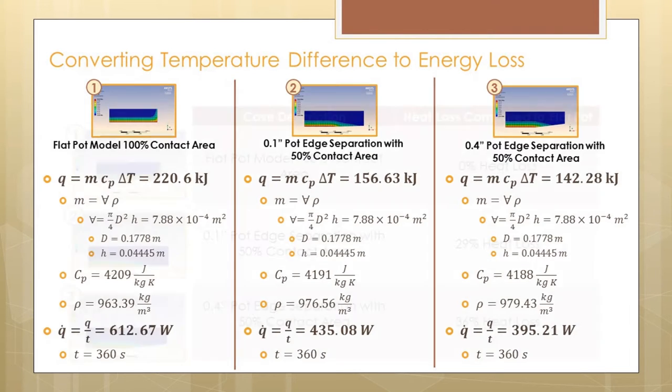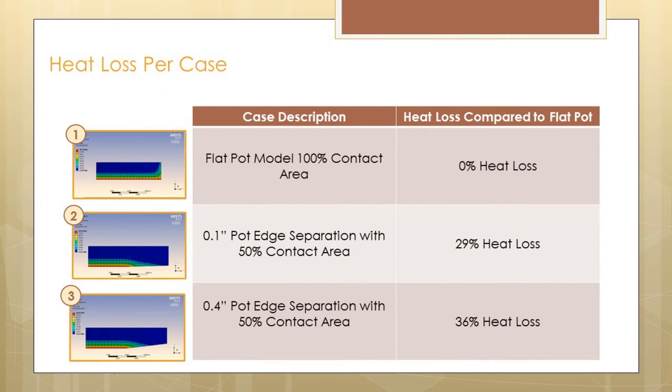From the results, we found that the warped model with the 0.1 inch edge separation had a 29% heat loss compared to the 100% contact area model. The 0.4 inch edge separation model had 36% heat loss.